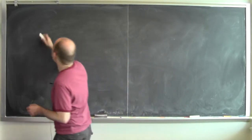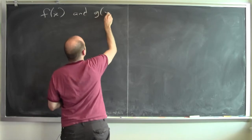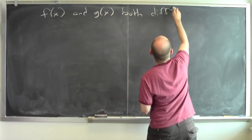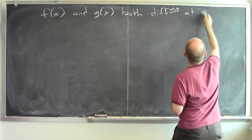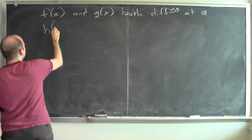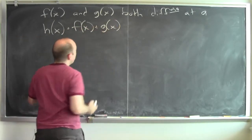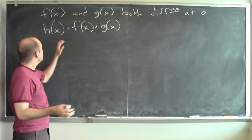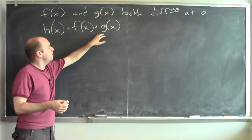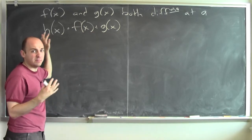I've got two functions, f of x and g of x, and they're both differentiable at a. Then I can define a new function h of x, which is the sum of f and g. To compute h of x, I just plug x into f and I plug x into g and I add together whatever f and g give me. So that's a new function that I build from f and g.